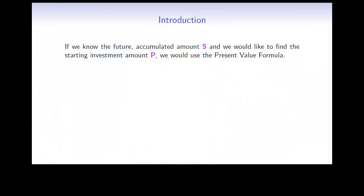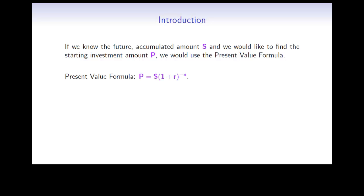Let's start by defining some of the variables involved in the formulas we will be using. If we know the future or accumulated amount of an investment, let's call it S, and we would like to find the starting investment amount, let's call that P, we would use the present value formula. This is given by P equals S times 1 plus R to the power minus N.